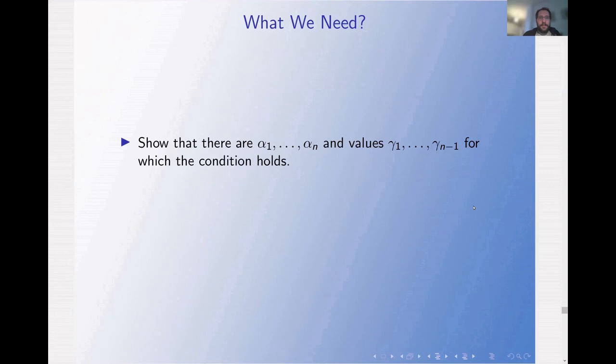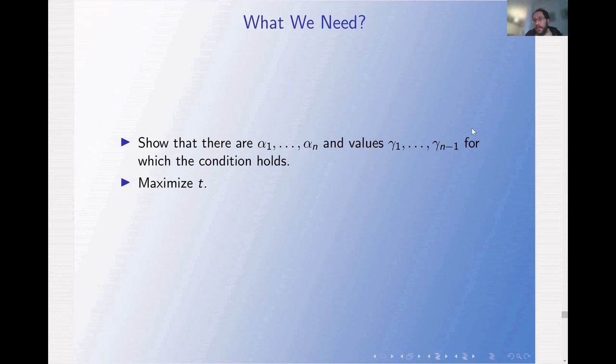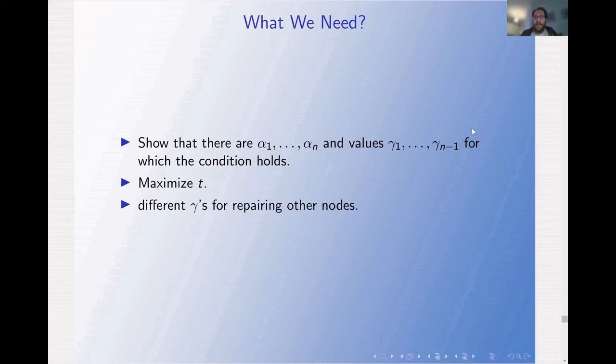So what we need is to show that there exist evaluation points alpha_1 through alpha_N and values gamma_1 through gamma_{N-1} for which the condition holds. We also need to maximize t to achieve small bandwidth — as t gets larger, the bandwidth gets smaller. The condition I described repairs the N-th node. The condition can be formulated so that all nodes can be repaired, with each node requiring different gamma values, and this is exactly what we did in our work.